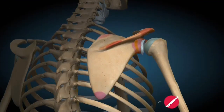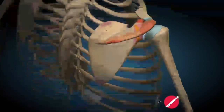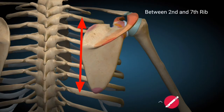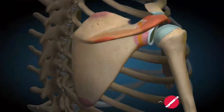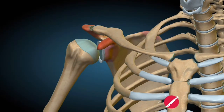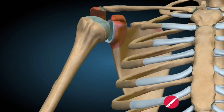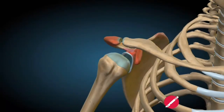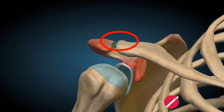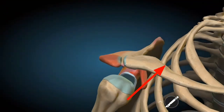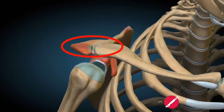The Scapula Bone is a large flat triangular bone that lies on the posterior chest wall, between the second and the seventh rib. On the lateral side, the Scapula articulates with the humerus bone through the glenoid cavity. Similarly, the Scapula Bone also articulates with the clavicle bone through the acromioclavicular joint. This is the acromion process of the Scapula Bone and this is the clavicle bone; these two bones articulate through the acromioclavicular joint.